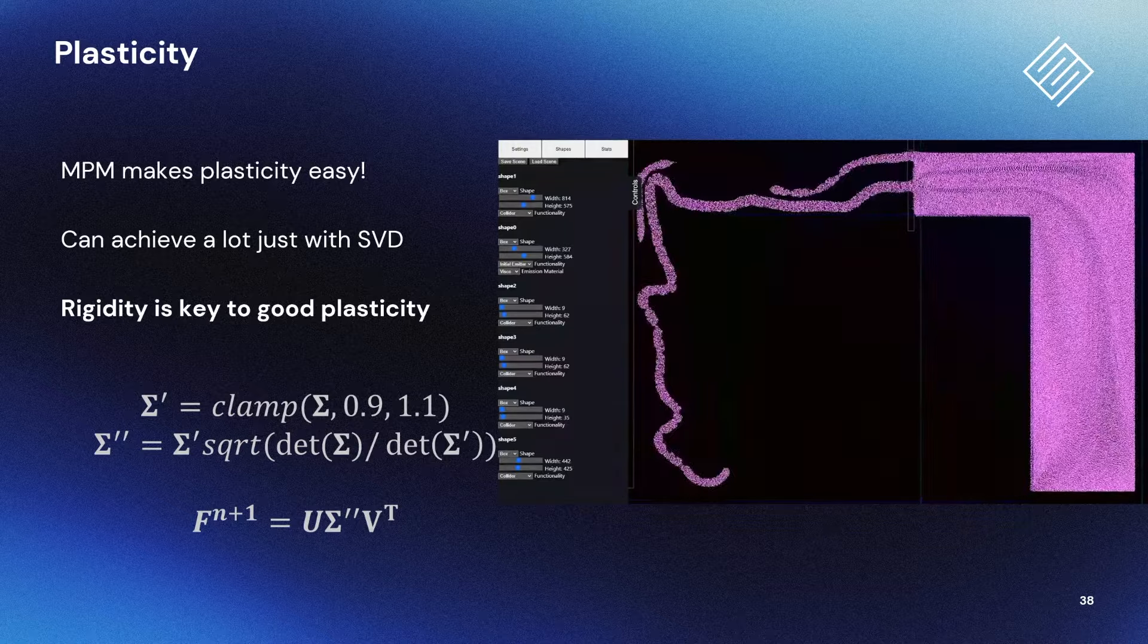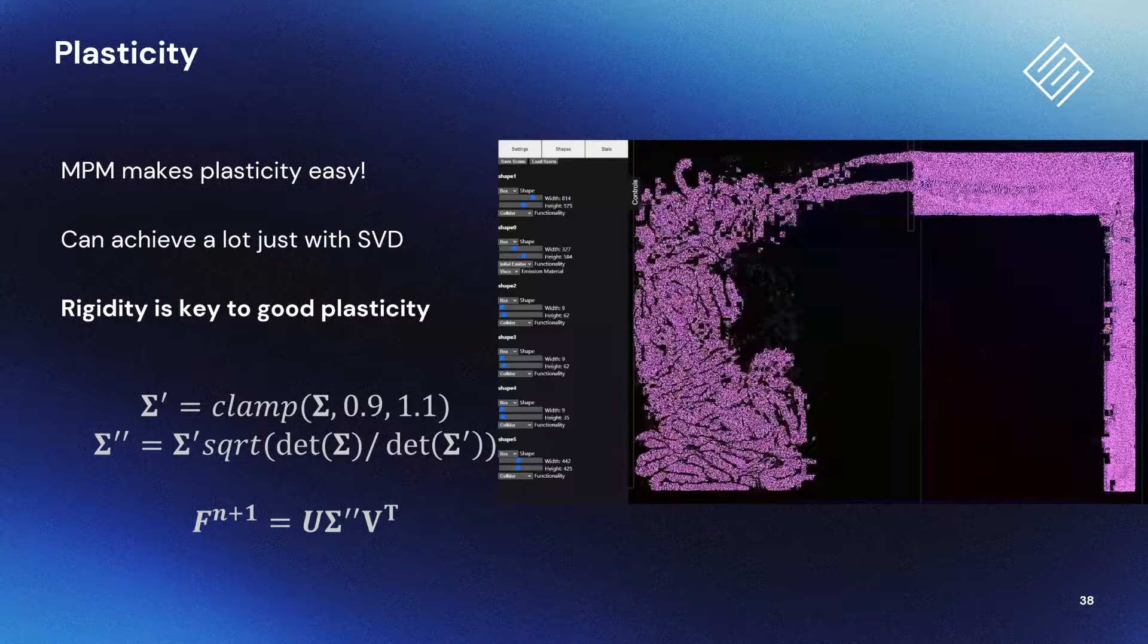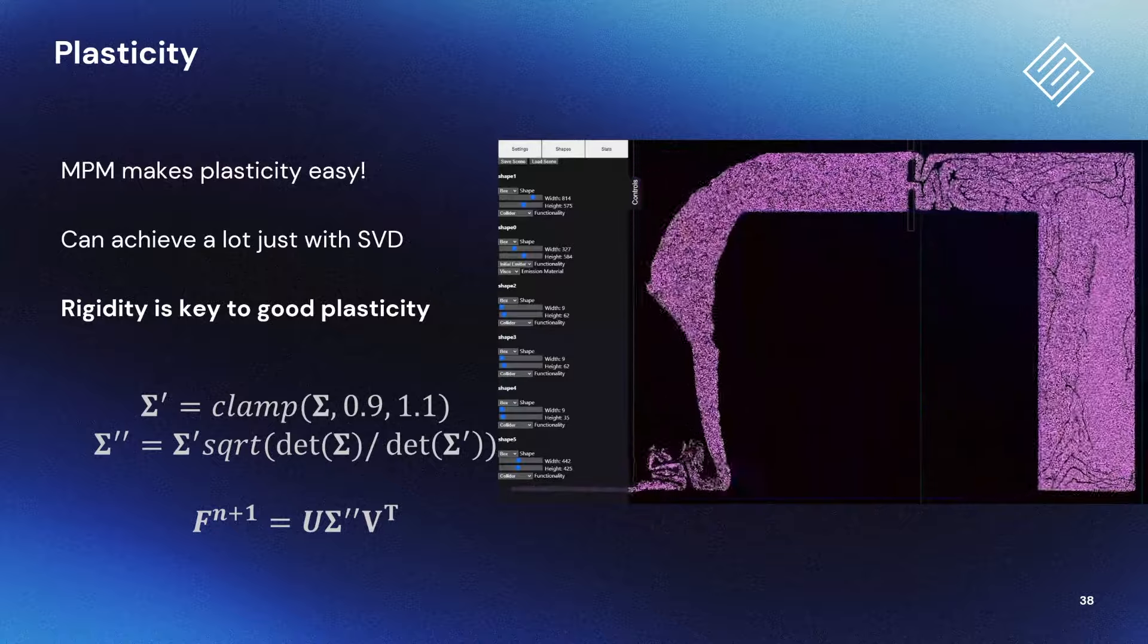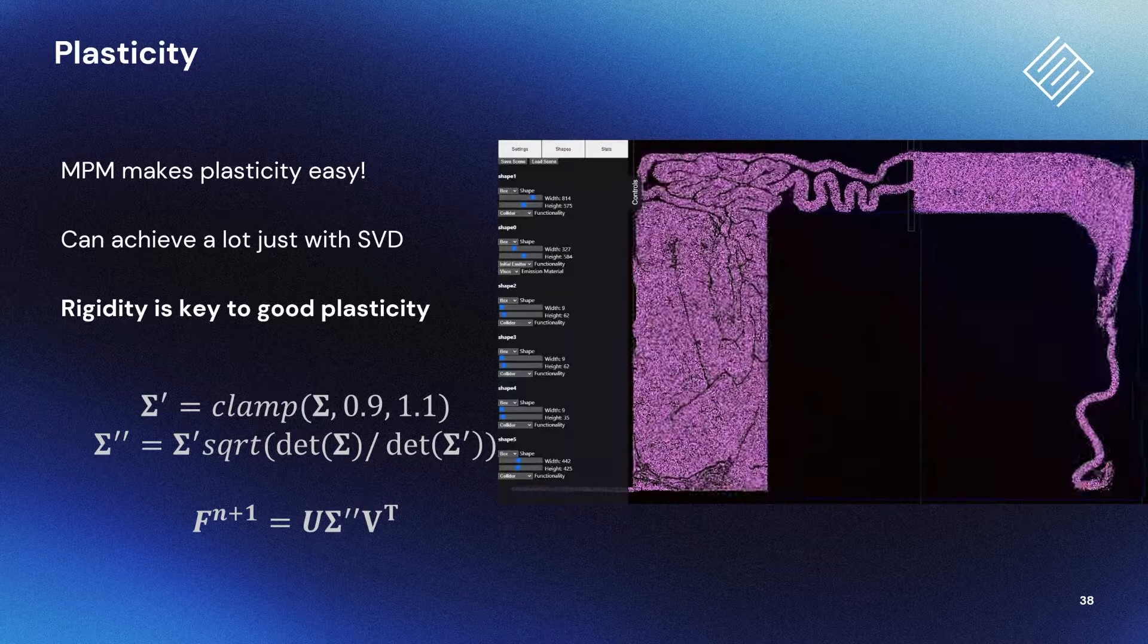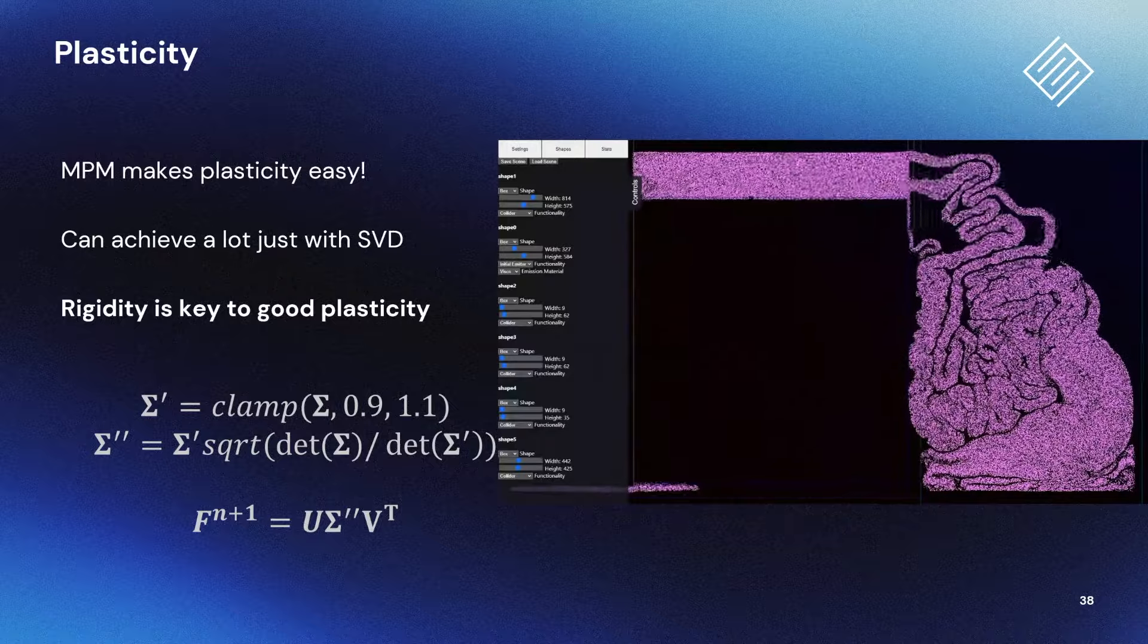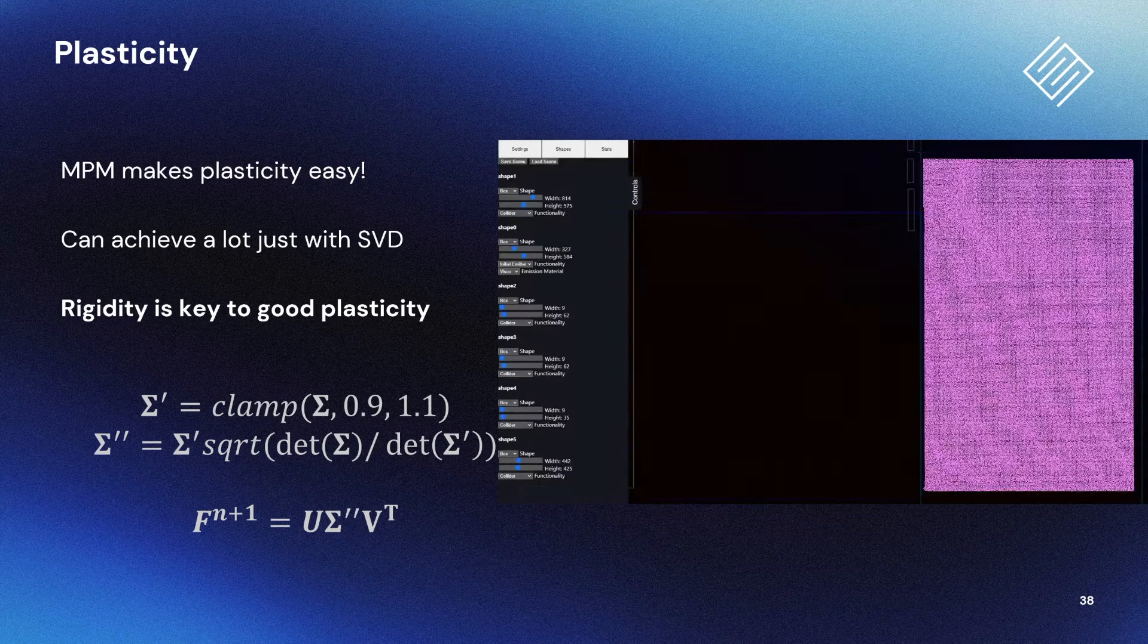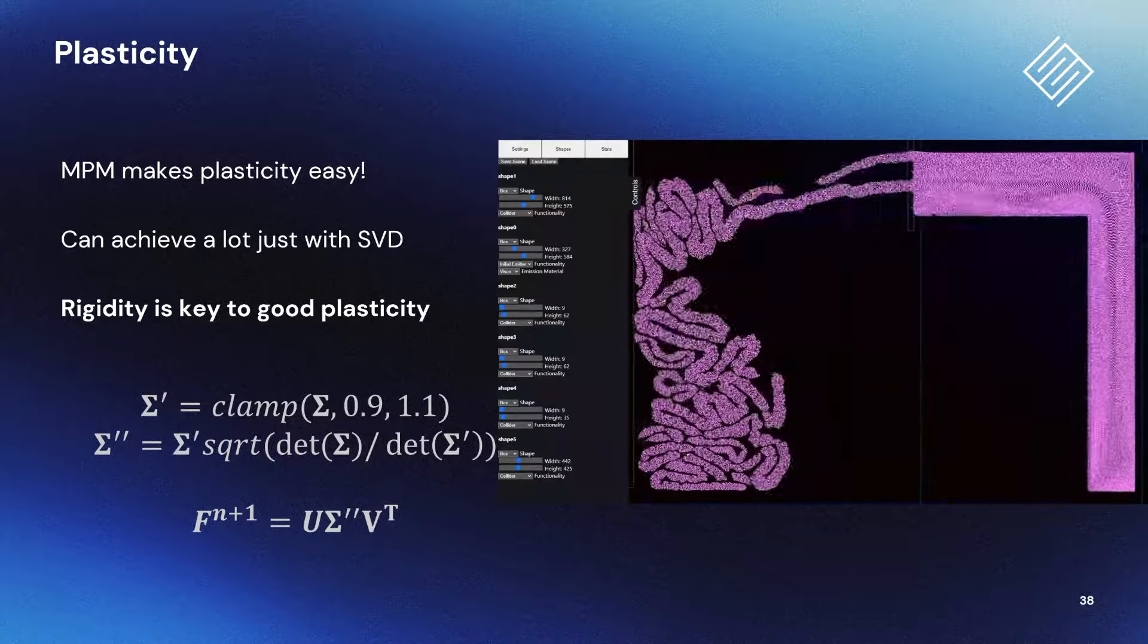One of the strengths of MPM is that it can do really good plasticity and it turns out it's easy to get a nice effect using the same techniques you can use in the explicit case. You can just modify your integration step a little bit to forget some of the deformation that's occurred. If we clamp the singular values of each particle's transform when integrating forward, we can forget any deformation over a certain limit. This lets us have plastic behavior without storing any extra data. If we correct the volume at the same time by dividing by the determinants before and after the clamp, then we can ensure this plastic flow is volume-preserving. This is all we need to make this kind of pleasing play-doh material.